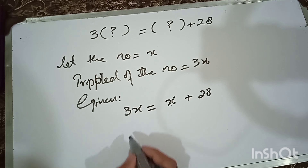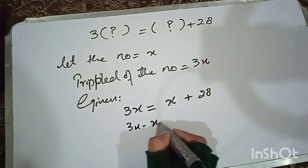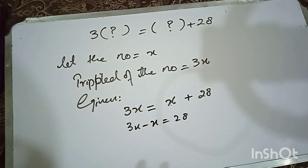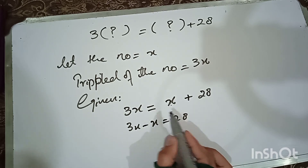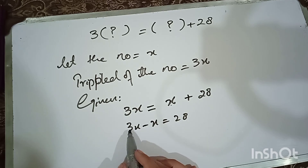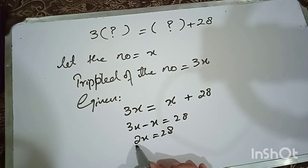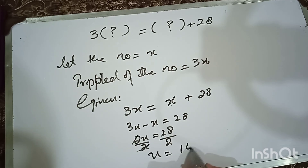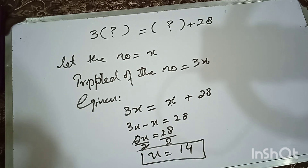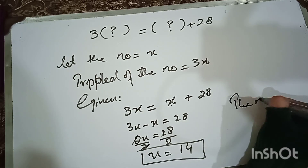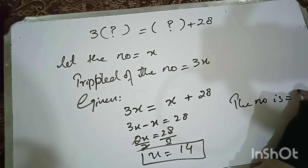Simplifying 3x = x + 28: subtract x from both sides to get 2x = 28. Dividing both sides by 2 gives x = 14. So the number is 14.